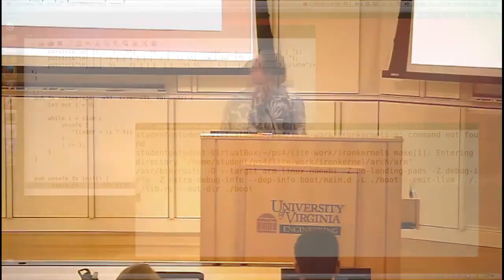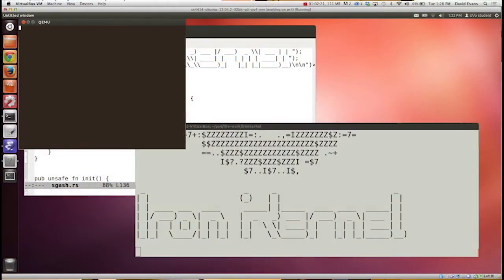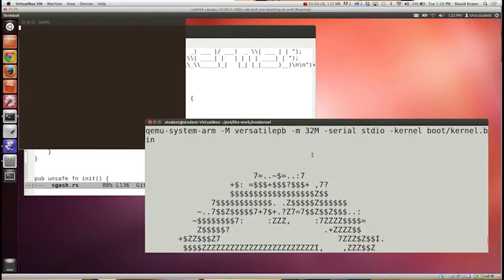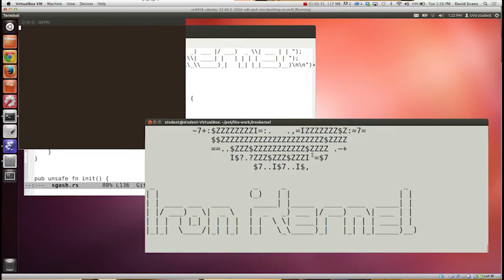So we're going to start running Iron Kernel. I will do make run. So I've compiled Iron Kernel. There are two things you see here. This is the shell that we started at Iron Kernel, and it's got a nice logo. Impressive ASCII art. So this is the shell that's running.